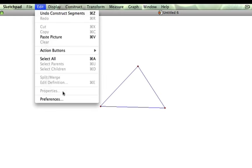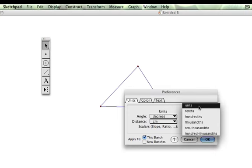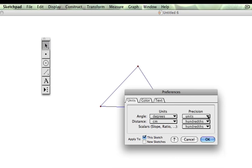So you go construct segments and that draws line segments between them. And what we're going to do also is edit our preferences and we want units. So it's going to round to the nearest whole number.